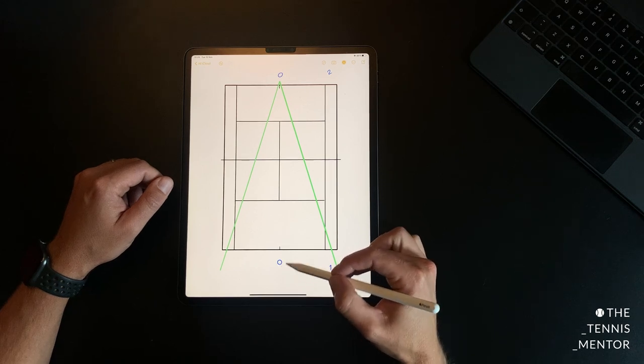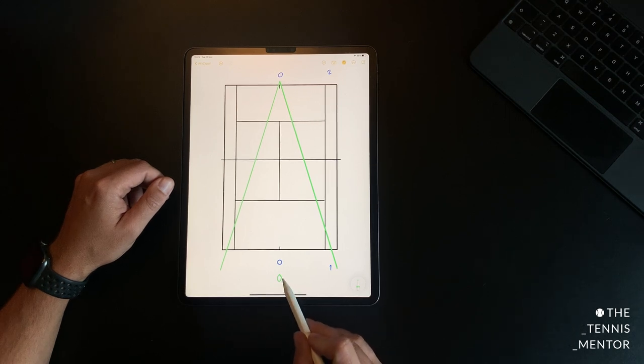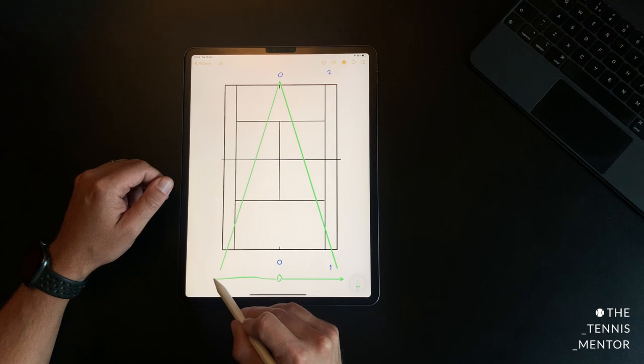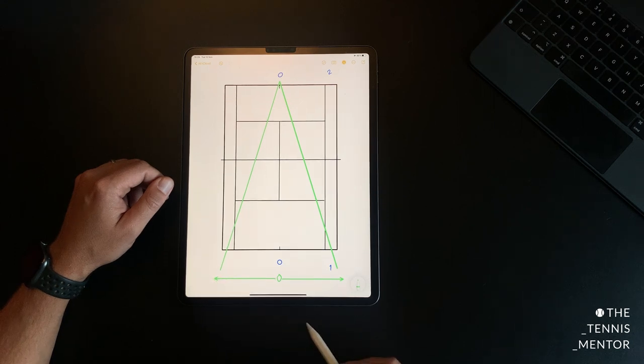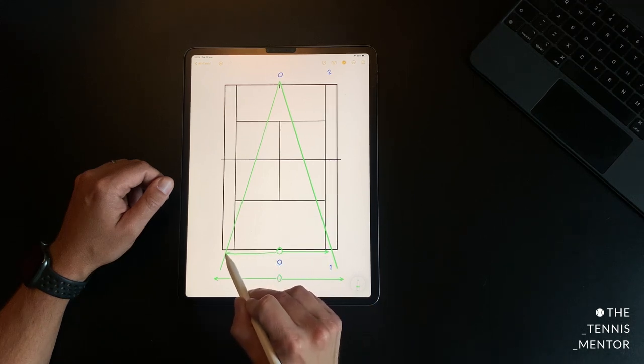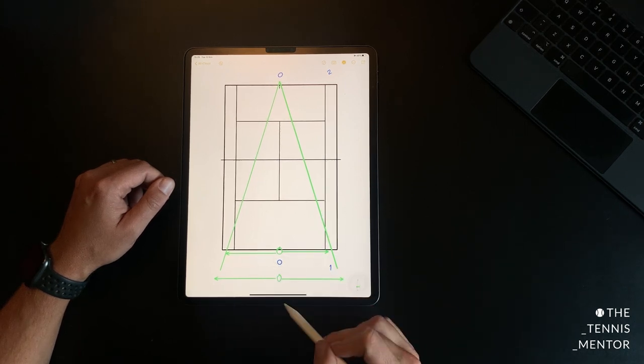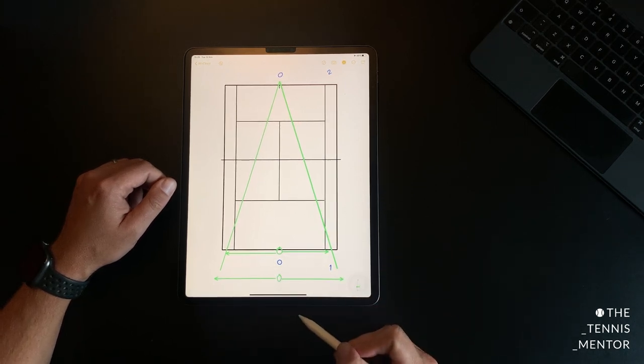Things to consider about the depth of your position. The further back you are, let's say if you were standing back here, you would have to cover more distance than you would if you were to stand up on the baseline. So you can see here if your position is slightly closer to the baseline you don't have to move quite as far as you would if you were further back.